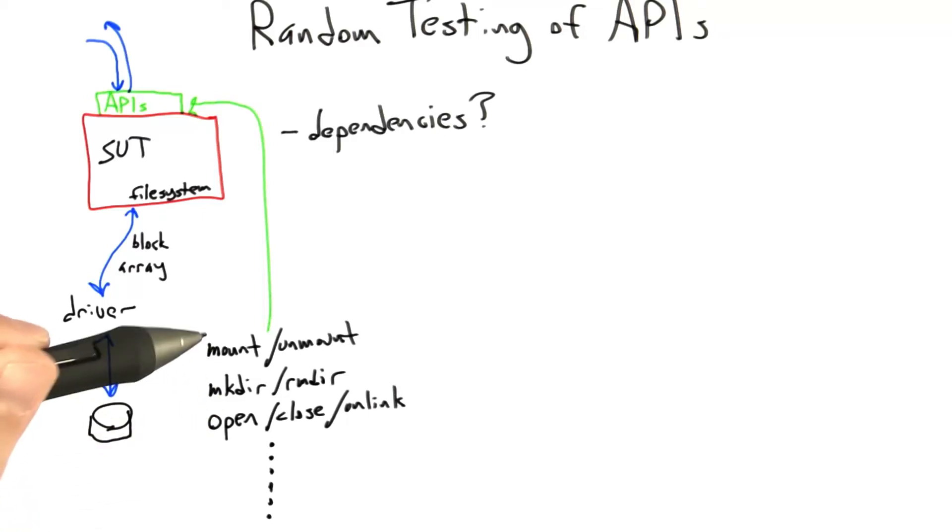So now let's look at these calls and try to figure out what the dependencies are among them. Well, first and most obviously, nothing is going to succeed. No file system call is going to succeed until we've mounted the file system.